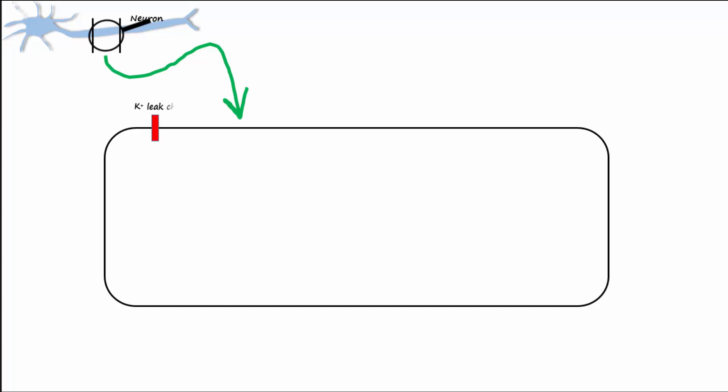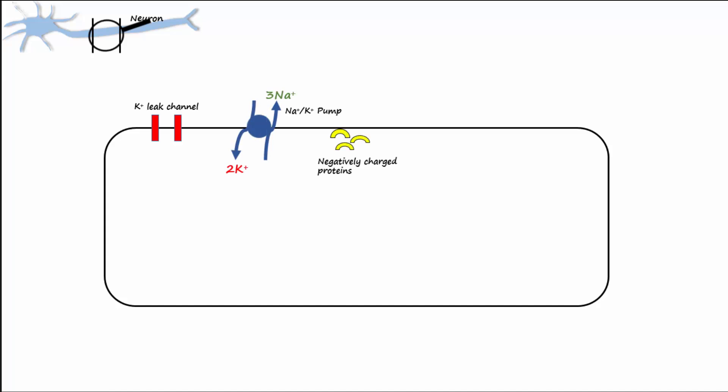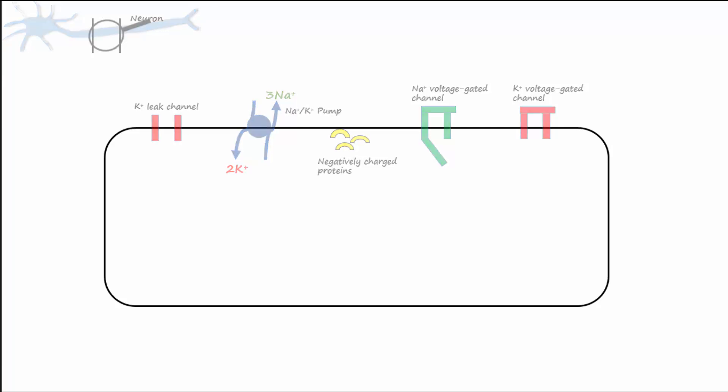Let's take a neuron and blow up part of it so that we can see how the proteins embedded in its plasma membrane make this possible. The main players that make electricity possible are potassium leak channels, sodium-potassium pumps, negatively charged proteins, sodium voltage-gated channels, and potassium voltage-gated channels. Let's talk about how each of these is important for sending electrical signals.